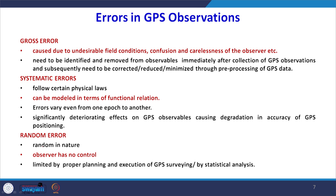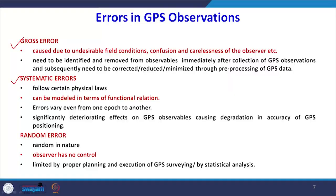We have errors due to various sources, but there are 3 categories. Gross error is caused by undesirable field conditions — if we are careless, gross errors might occur and could also be blunders. Systematic error, as the name suggests, follows certain physical laws and is systematic in nature. If we know the nature of the error, we can model it mathematically, find its magnitude, and know whether to add or subtract it.